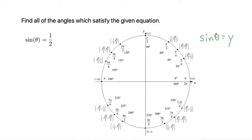So since we know that the sine of the angle is equal to the y-coordinate on the unit circle, we can go around the unit circle and find everywhere where the y-coordinate is equal to 1 half.